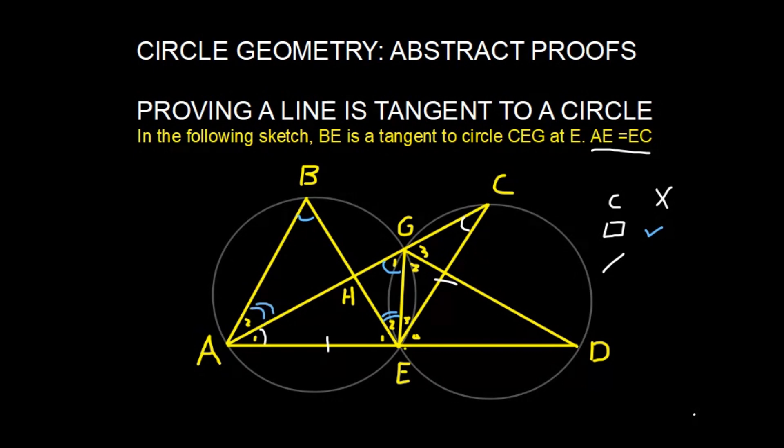Fantastic. For those who are slightly unsure about theorem six, what we need to look for is a chord that subtends equal angles. In pretty terms, we could say a bowtie, if you look there, or a butterfly. You see there's a little butterfly there. Okay, fantastic.